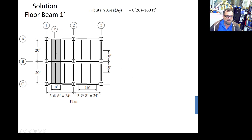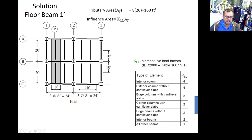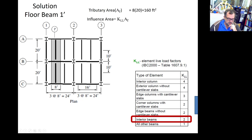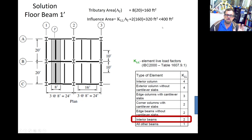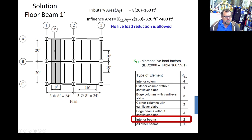Now, what type of element is this? Looking at the table, it's an interior beam, so KLL equals 2. The influence area is 2 times 160 equals 320. Since 320 is smaller than 400, no live load reduction is allowed.